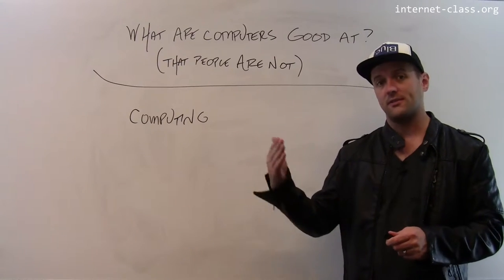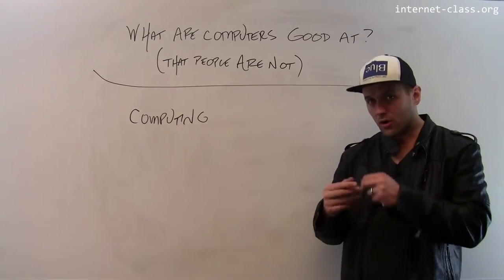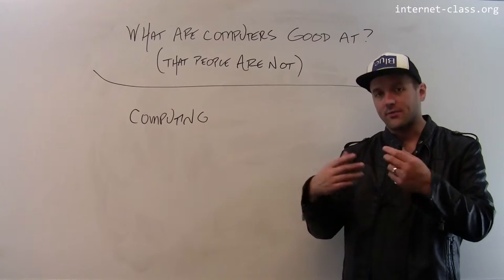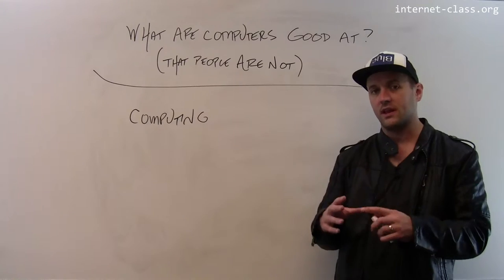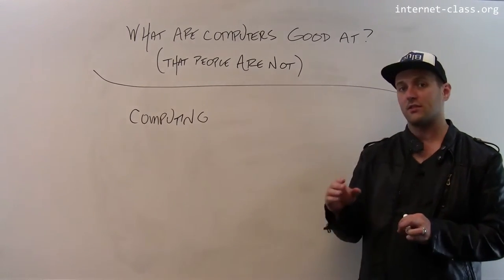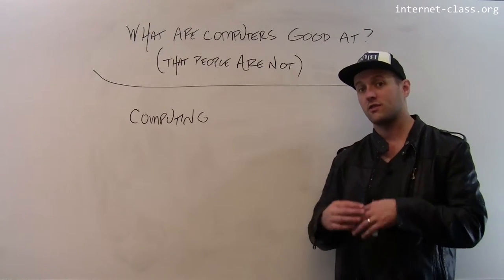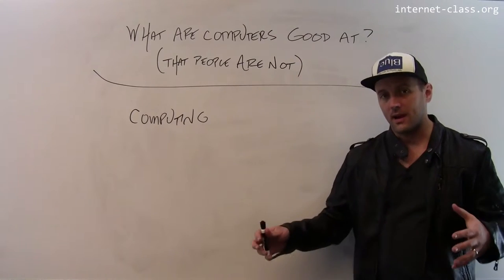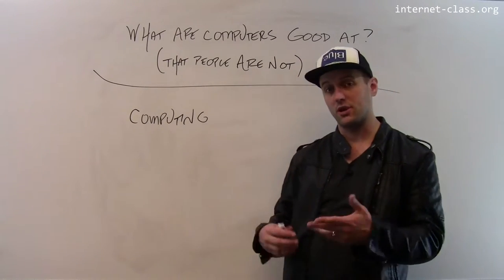As computers have gotten faster and faster at an incredible rate, all of those computations and clever algorithms and new ideas for ways to process data have led computers to have all these human-like characteristics. But at their fundamental base, all they're doing is simple mathematical operations over and over again, but just so fast that those operations can start to result in things that seem much more human and much more complicated.